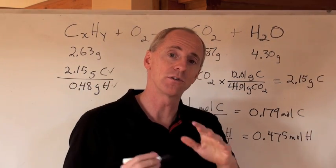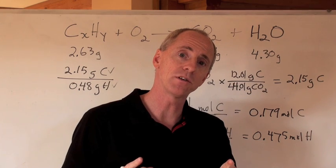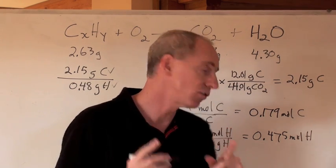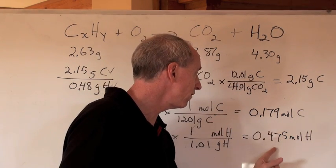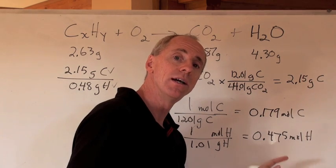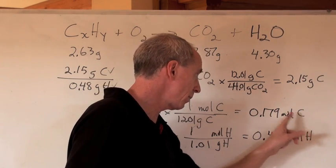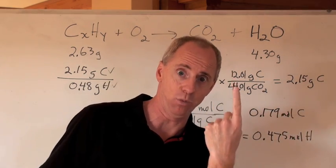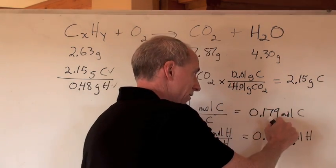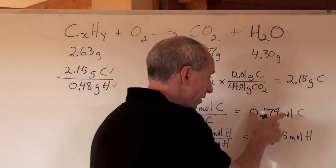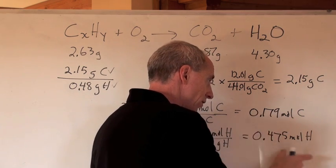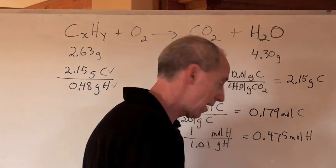Remember, you turn grams into moles. What do you do for empirical formula then? Take the smallest mole quantity and divide it into each number. Now, when you take this number of moles of carbon and divide it into itself, you get one carbon. And then if you take this number and divide it into here, the smallest into each one, you're going to get a ratio.